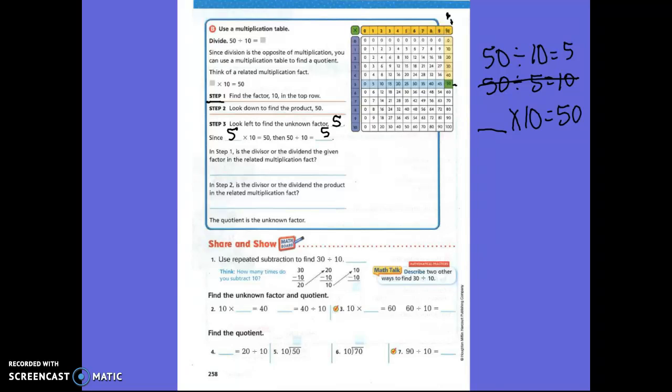Let's read this little problem here. In step one, is the divisor or the dividend the given factor in the related multiplication factor? So, if this is our problem, fifty divided by ten, is ten the divisor or the dividend? Ten is the divisor. The dividend is your big number. Is ten the big number? No. So, what is this? Divisor. Ten is the divisor.